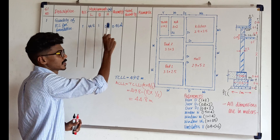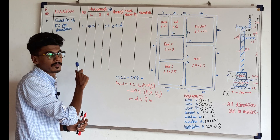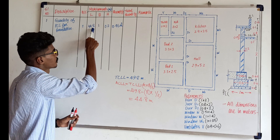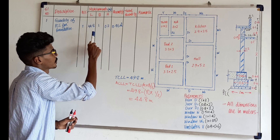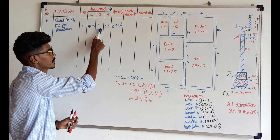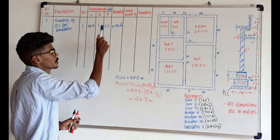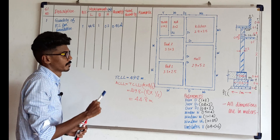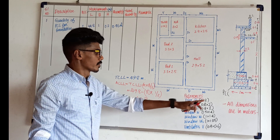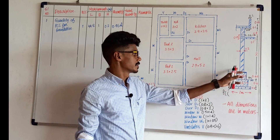Which is equal to 0.96 meter cubes. What is the unit? Length, breadth, height — meter into meter into meter — meter cube is the answer. In this portion, we call it PCC.